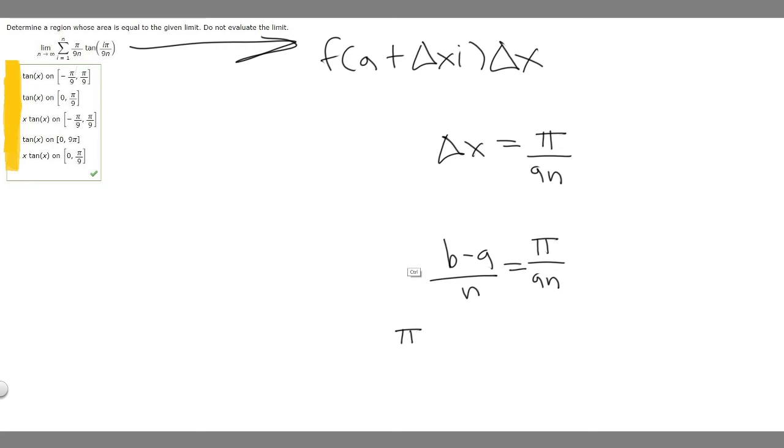Let's check the others. What about this one? If we do 9 pi minus 0, is that going to equal pi over 9n? It won't, so this one's automatically off the board. Let's look at this one. Let's do pi over 9 minus negative, so it's going to become plus. Pi over 9 divided by n. That's not going to equal this, so this one's off the board too.